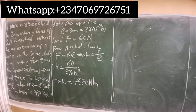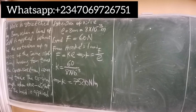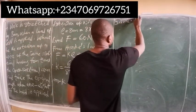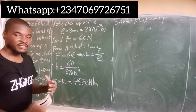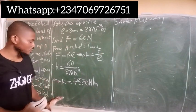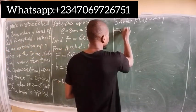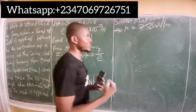Now, what would be the extension of a wire of the same material having four times the cross-sectional area and twice the original length when one-eighth of the load is applied? Since it is the same material, the spring constant remains the same — k equals 7500 newtons per meter.